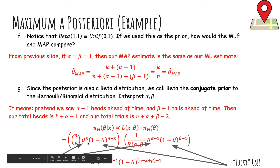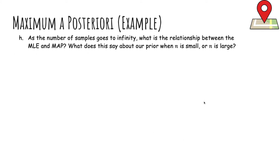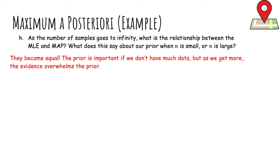As the number of samples n goes to infinity, MLE and MAP become equal. The prior matters when you don't have much data: with only 5 trials, any fake heads and tails from the prior significantly affect the estimate. But with 10 million samples, pretending you saw 2 heads and 3 tails ahead of time barely changes anything. As n grows, the evidence overwhelms the prior, which gets washed away.